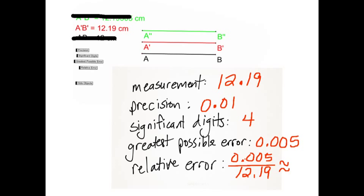Greatest possible error, 5 one-thousandths. So we're basically just moving over one place value, decimal place value, and putting a 5 there.